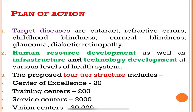The proposed four-tier structure under Vision 2020 includes: centers of excellence (about 20), training centers (200), service centers (2,000), and vision centers (about 20,000).